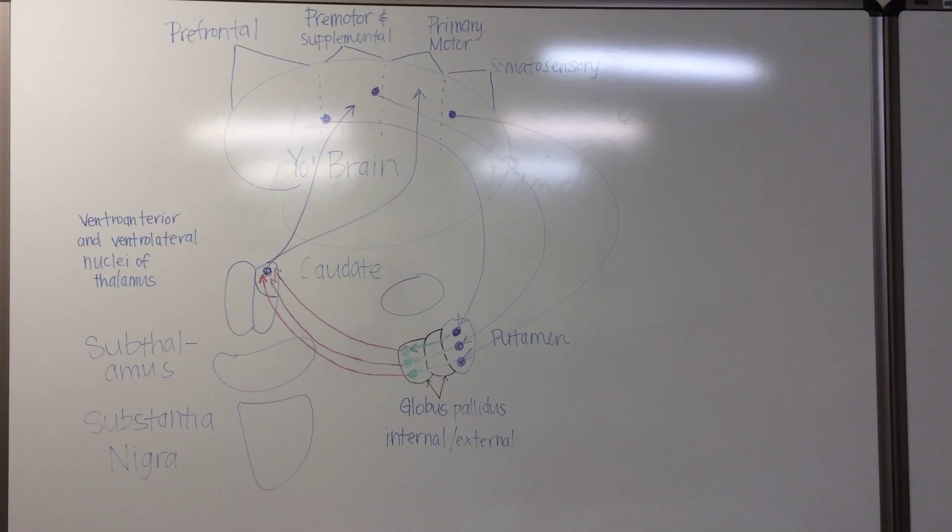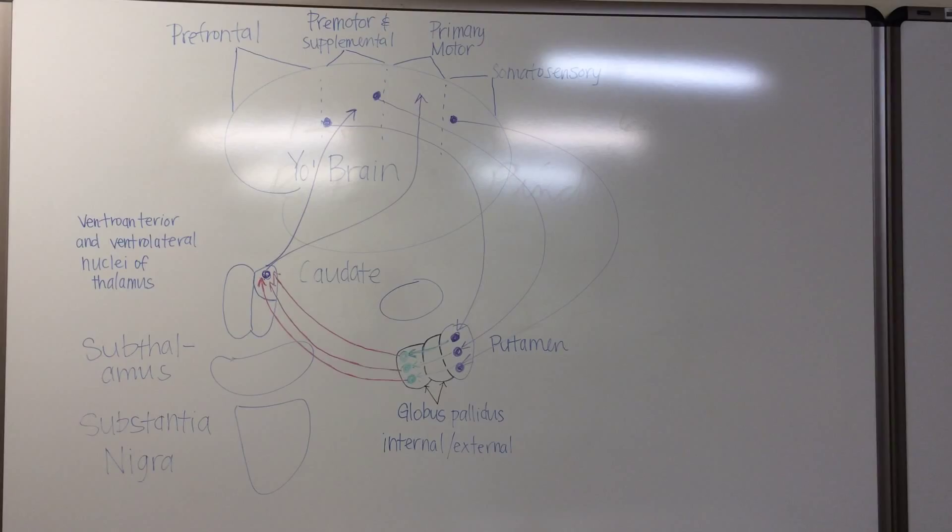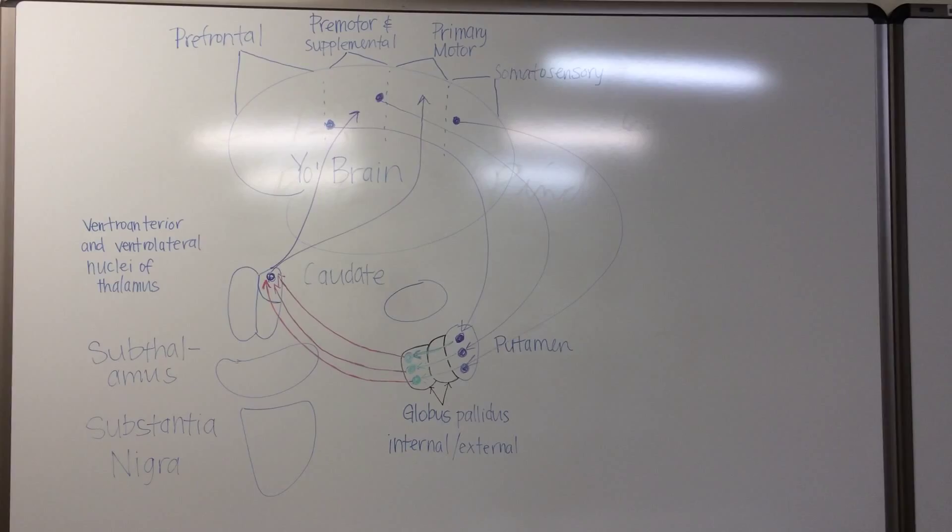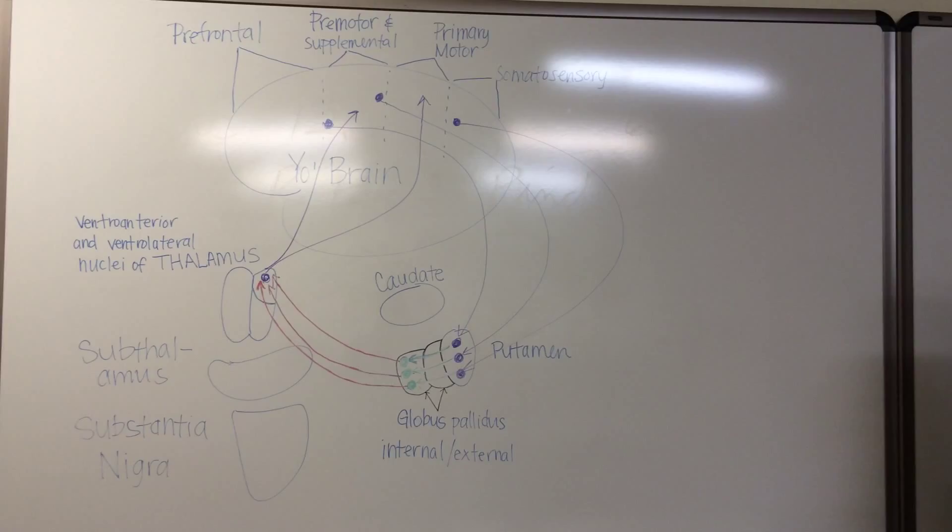What you see in front of you is a diagram of the putamen circuit and the caudate circuit. Both of these are functions of the basal ganglia which include the thalamus, the subthalamus, the substantia nigra, the caudate, the putamen, and the globus pallidus. Two circuits of the putamen circuit are the primary putamen circuit and the ancillary putamen circuit. The third is the caudate circuit. And now Crystal is going to demonstrate the primary putamen circuit.